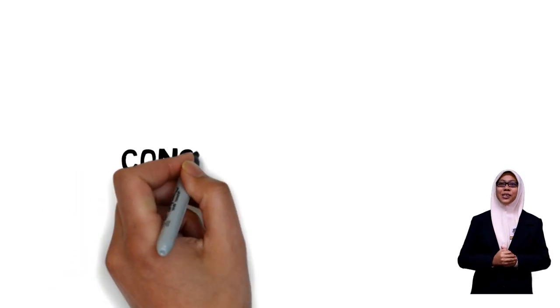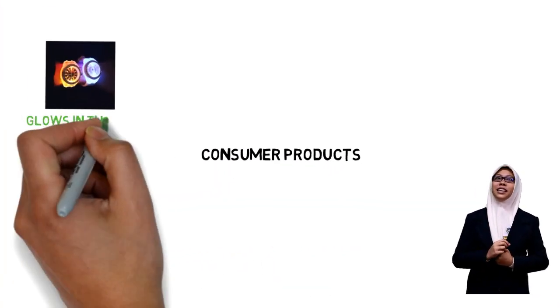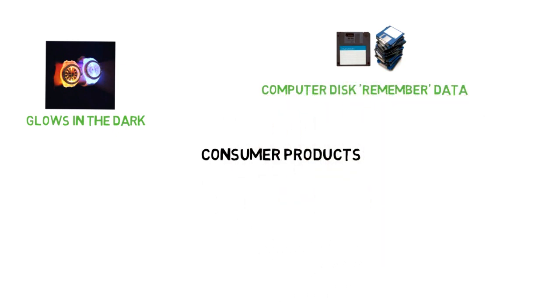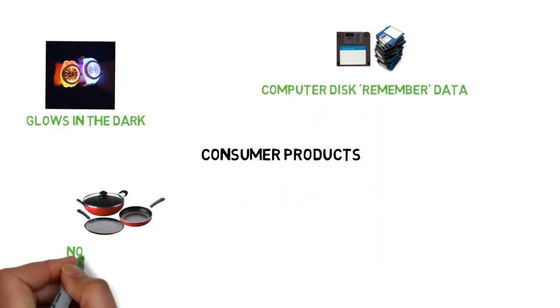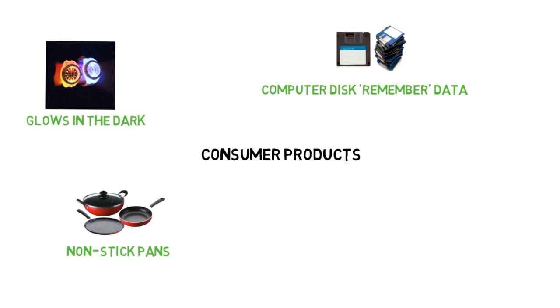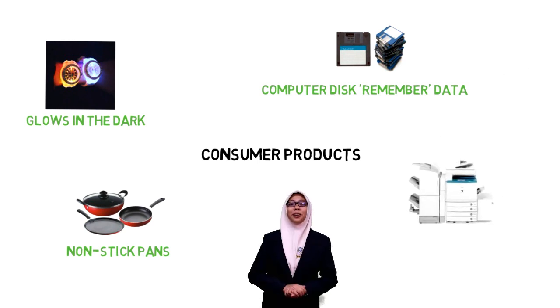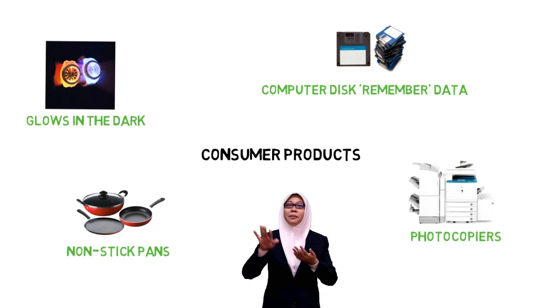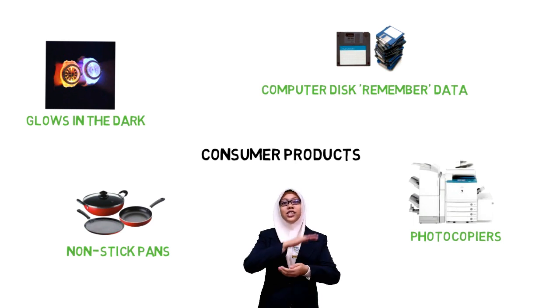First is consumer product, such as watches and clocks that glow in the dark, which use radioisotopes as a source of light. Computer storage retains data better when treated with radioisotopes. Treating non-stick pans with radiation ensures that the coating will stick to the surface. Copiers also use a small amount of radiation to eliminate static and prevent paper from sticking together and jamming the machine.